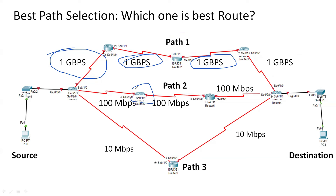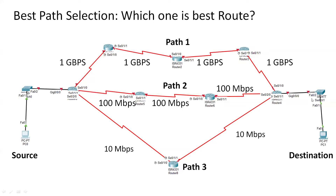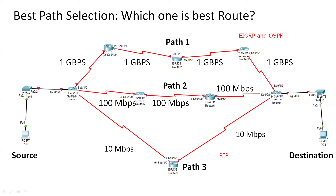Path three has a bandwidth of only 10 Mbps. Path one has the maximum number of nodes, which is three nodes, while path three has the fewest nodes. So which one will be the best path to forward the data? If we are using dynamic routing protocols, EIGRP and OSPF will automatically use path one. Path three is used by RIP. The reason why these protocols choose different paths will be discussed in a separate routing topic.